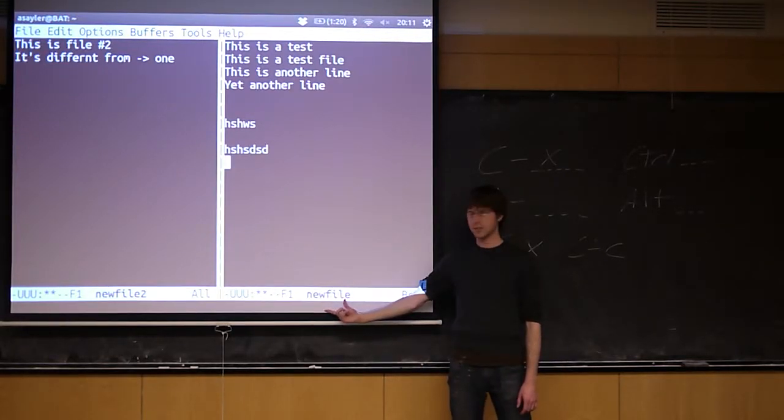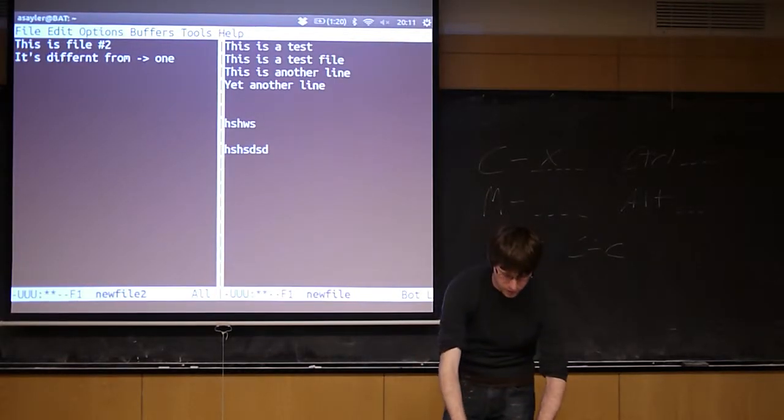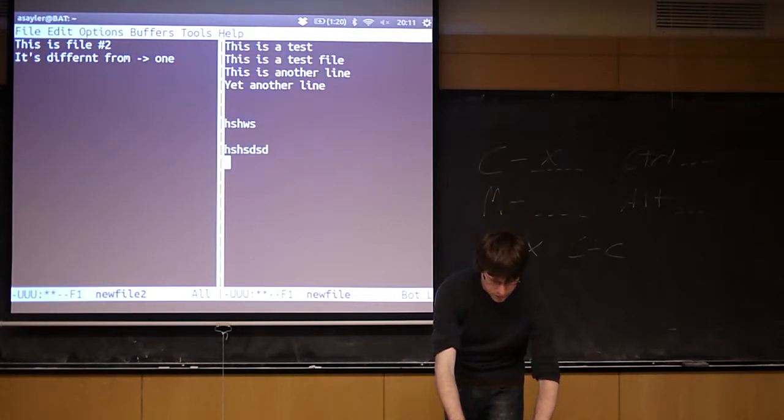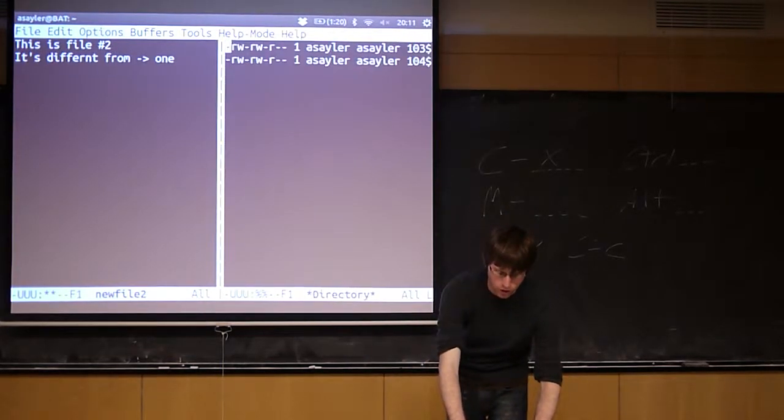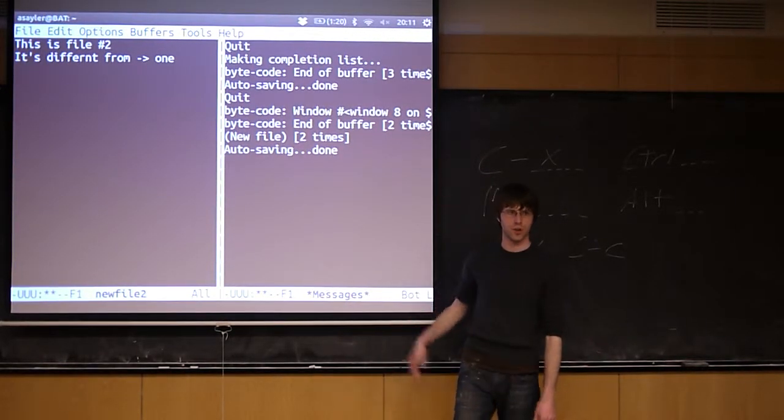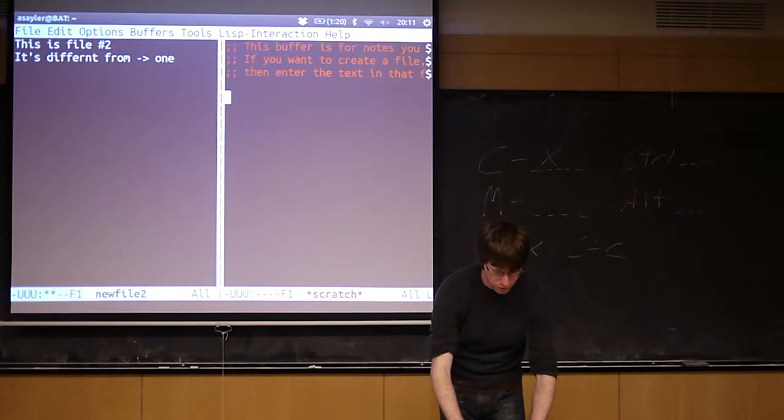So again, this buffer is called new file. If I do that Control-X cycling through again, new file three, new file two, and then all of those special buffers. Anything with a star like this is a special systems buffer. That's just stuff that's always open. Some of those are useful, some of them aren't.